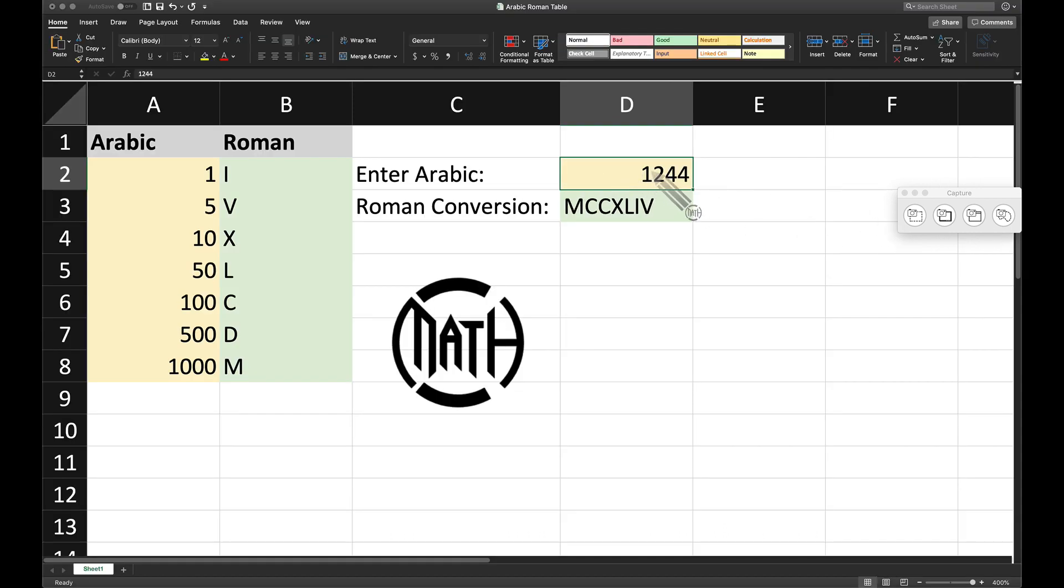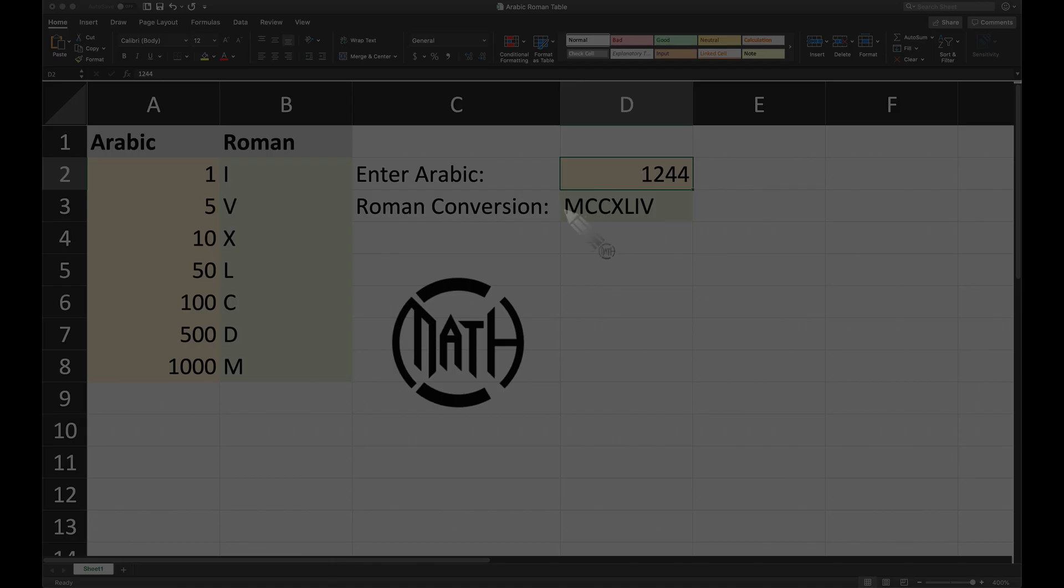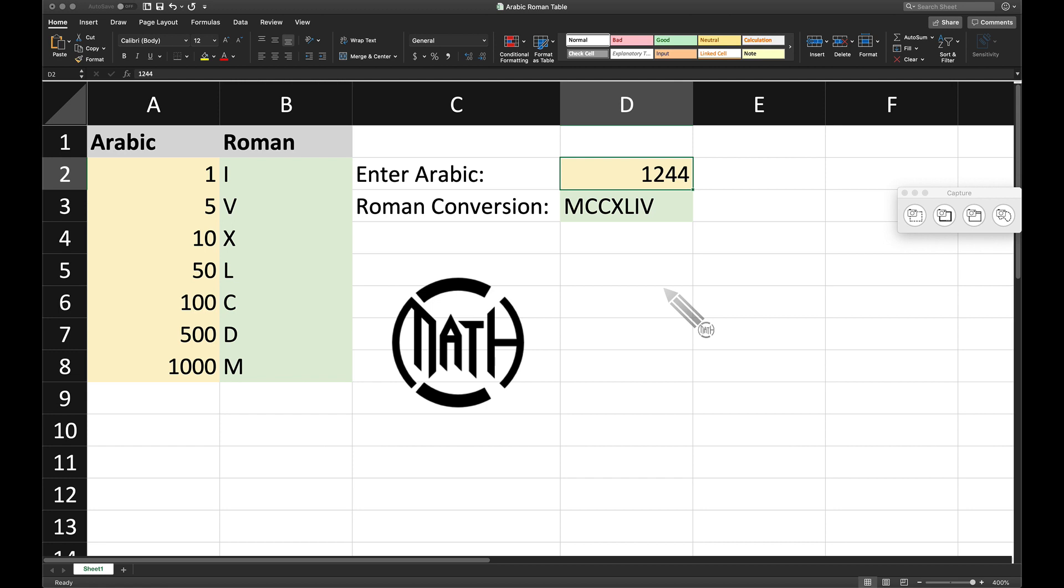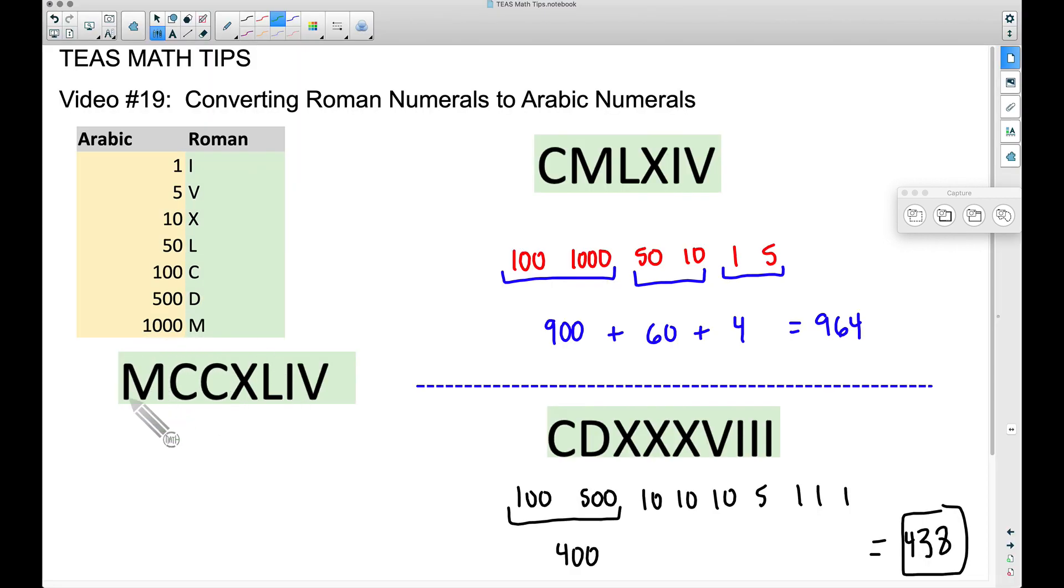And now let's do one more for safe measure - 1244. Let's see how we convert this to get 1244. The M is 1000, we got two Cs so that's 100, 100. X is going to be 10, L is going to be 50, the tally is going to be a 1, and the V is going to be a 5.